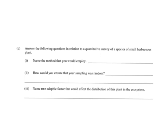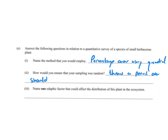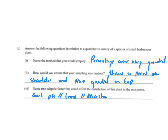In an exam question on a quantitative survey of a small herbaceous plant: the method to use is percentage cover with a quadrat. To ensure random sampling, you would throw a pencil over your shoulder and place the quadrat on top of where it lands. One edaphic factor that could affect the distribution of this plant in the ecosystem could be soil pH, soil temperature, soil moisture content, or soil type.